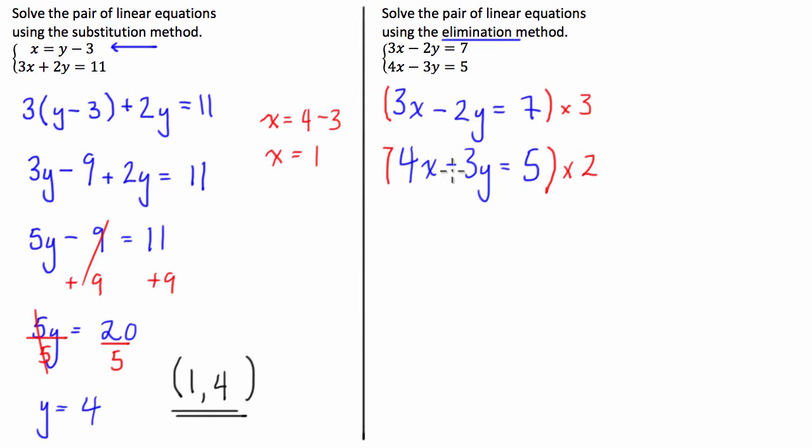So what we're left with guys is we have 3 times 3x is 9x take 3 times 2y is 6y equals 3 times 7 is 21.